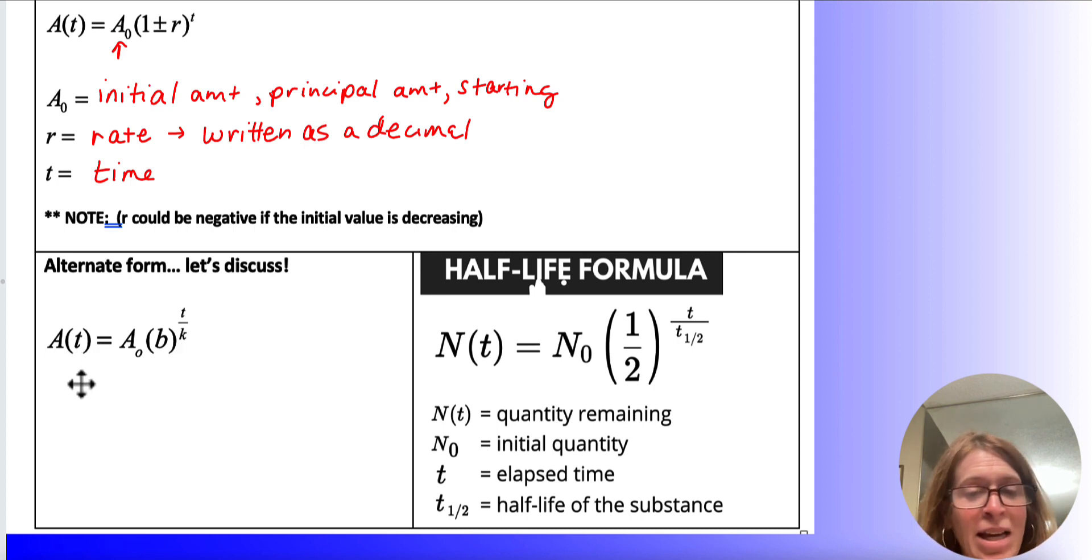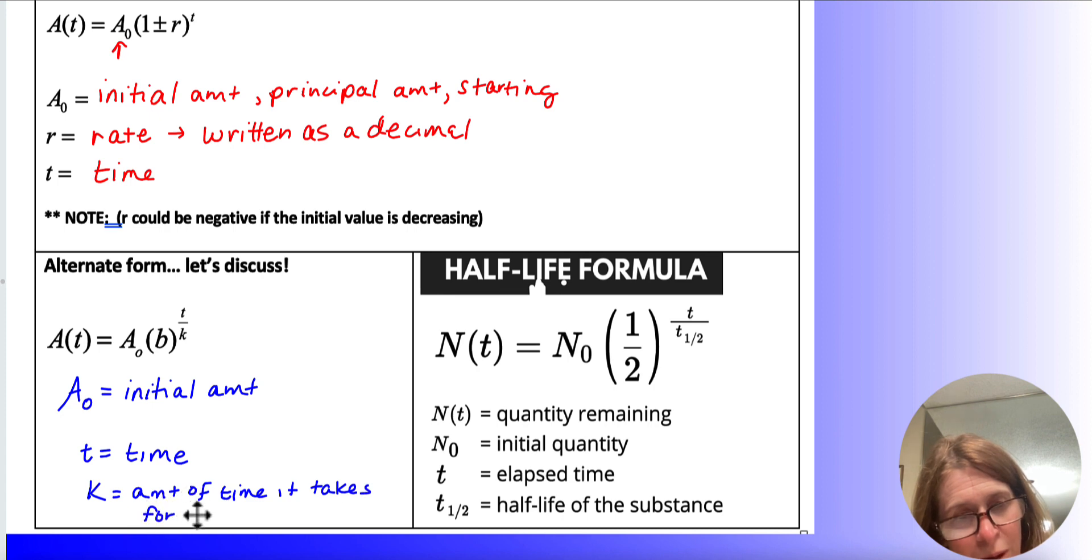So a of t, amount at t time, okay? A sub 0 still is your initial amount. Let me switch to a different color. Initial amount. So a of t is time, t is time, and k really becomes the amount of time it takes for A sub 0, so the initial amount, to be multiplied by b. Okay?